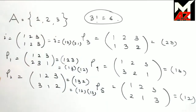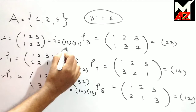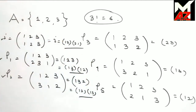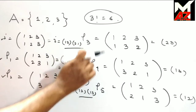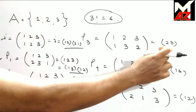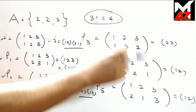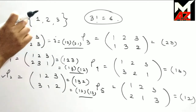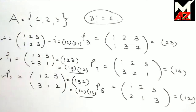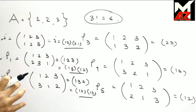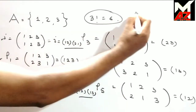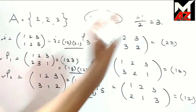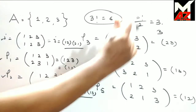Here, 3 permutations — i, ρ1, and ρ2 — are even permutations, because they are the product of an even number of transpositions (2 transpositions each). But ρ3, ρ4, and ρ5 are odd permutations, because each consists of only 1 transposition. So half of the 3! permutations are even and half are odd: 3 even and 3 odd.